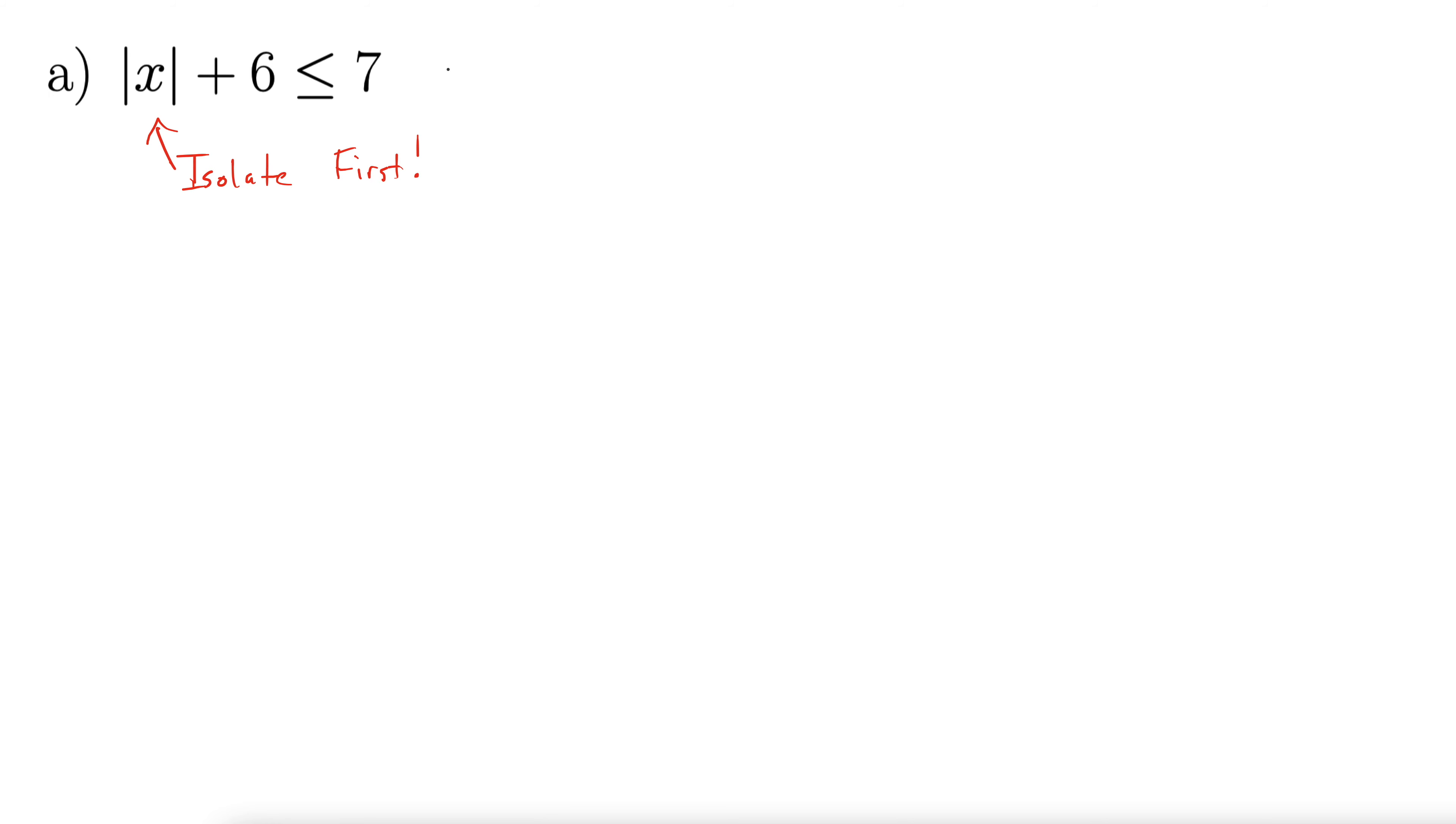Okay, so I'm going to subtract a 6 from both sides. That gives me absolute value of x is less than or equal to 1. And then I am going to use less means nest.